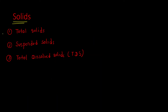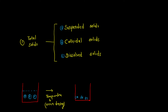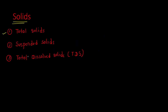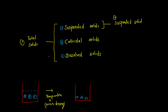Suspended solids, as the name suggests, is only part (a) — that is, the suspended fraction. The last category, total dissolved solids, includes the remaining two: colloidal solids plus dissolved solids. Adding these two gives us the value we call total dissolved solids.